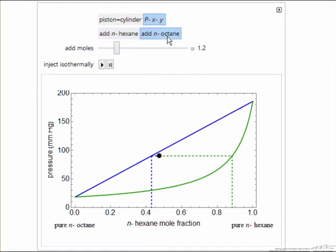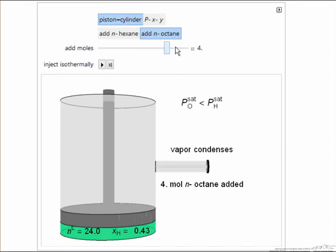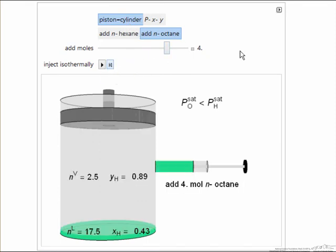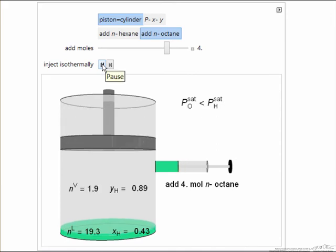If instead I inject octane, well now we can move into the all-liquid regime. So let's reset. We start out with a mixture of hexane and octane, and now I'm injecting pure octane.